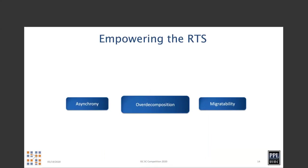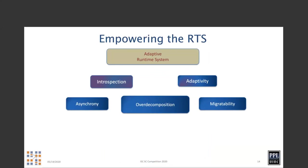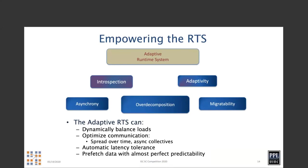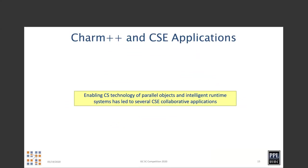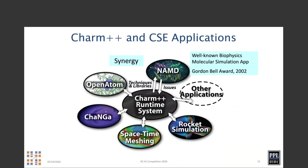Once we have this foundation of asynchrony, over-decomposition, and migratability, if we build a runtime system that can introspect what's going on and add adaptivity such as migrating objects and scheduling, we get an adaptive runtime system that can do many interesting things: load balancing, communication optimization, et cetera. This system has been developed in the context of multiple applications. NAMD is a very well-known biomolecular simulation application. Changa is a computational astronomy application. Co-development of these applications with Charm++ has made it what it is today — adding a feature because one application needs it and then making it available to others.